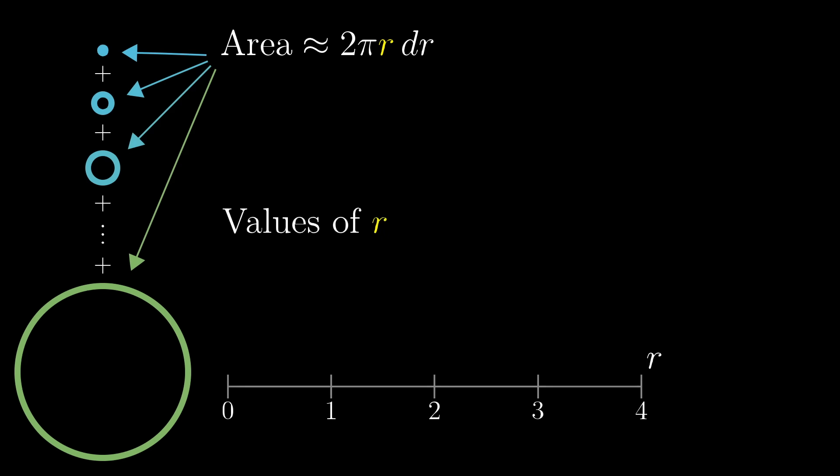So just to sum up where we are, you've broken up the area of the circle into all of these rings, and you're approximating the area of each one of those as 2 pi times its radius times dr, where the specific value for that inner radius ranges from 0 for the smallest ring up to just under 3 for the biggest ring, spaced out by whatever the thickness is that you choose for dr, something like 0.1.